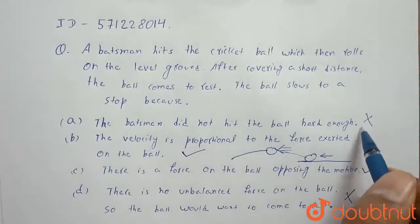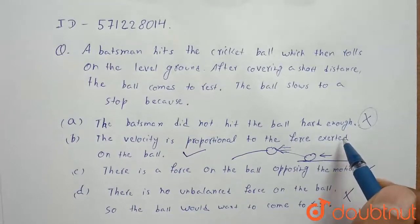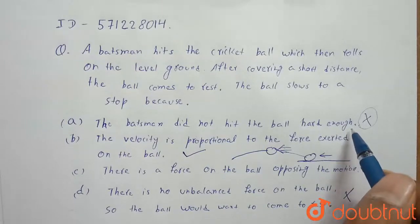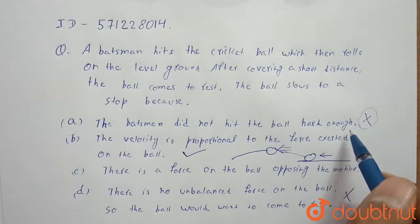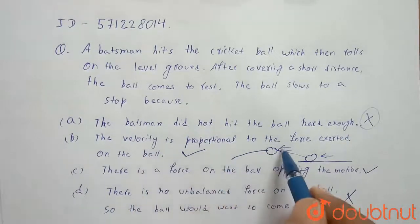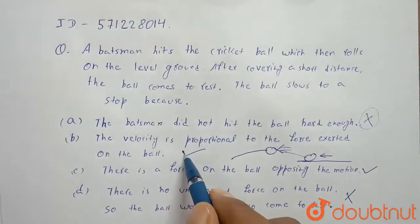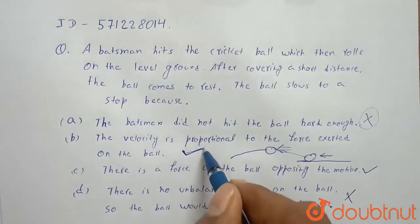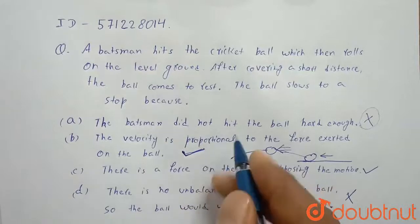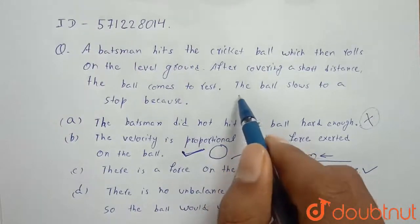The first option is: the batsman did not hit the ball hard enough. This is false, because if the batsman hits the ball harder, the velocity will increase only — but that doesn't mean it will not stop. The second option is: velocity is proportional to the force exerted on the ball.